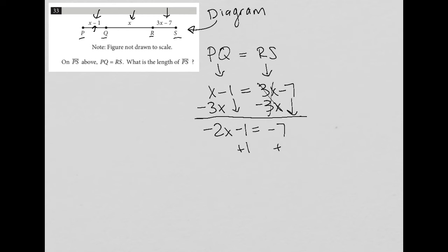And I'm going to add 1 to both sides to consolidate my numbers on the right-hand side. So the 1 is gone here. I still have negative 2X. Negative 7 plus 1 is negative 6. Divide both sides by negative 2. And what I'm left with is that X is equal to positive 3.